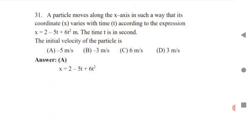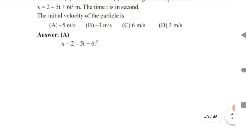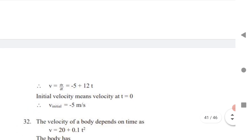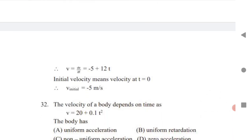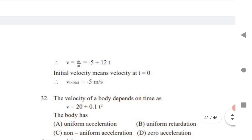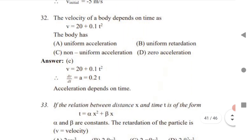A particle moves along the x-axis where x varies with time. To find the initial velocity: the formula is v = dx/dt. Differentiating x (where the constant term becomes 0) gives v = −5 + 12t. To find the initial velocity, substitute t = 0, which gives v = −5 m/s. Whenever a question asks for initial velocity, just substitute t = 0 into the velocity expression.